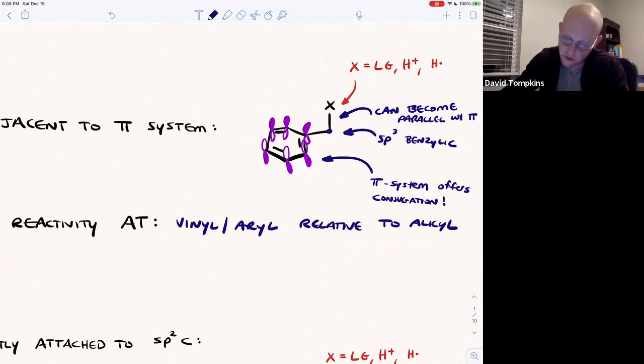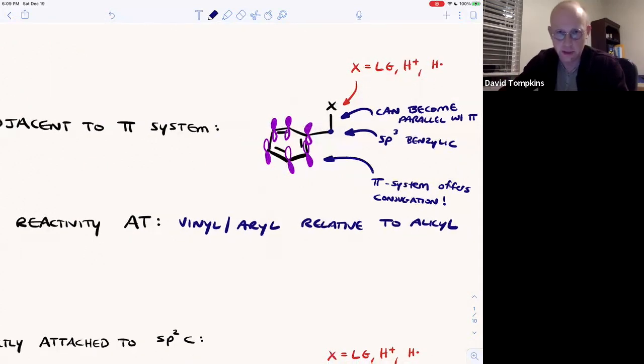And that same argument works for the allylic case. You would just have one of these alkenes instead of the aromatic ring if it were allylic.